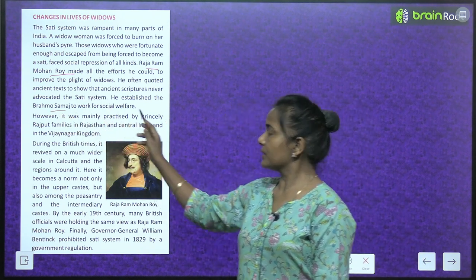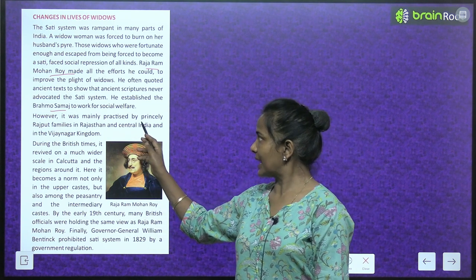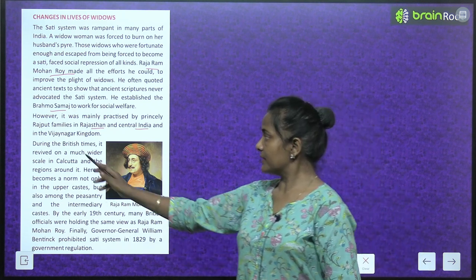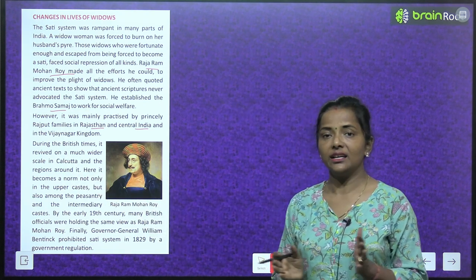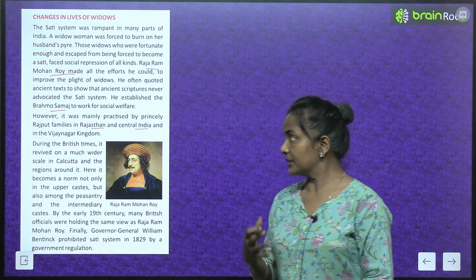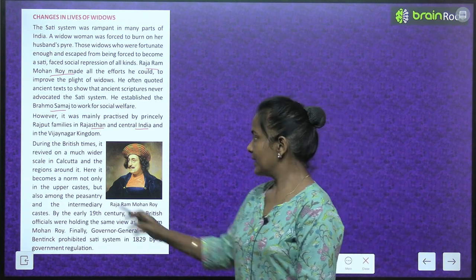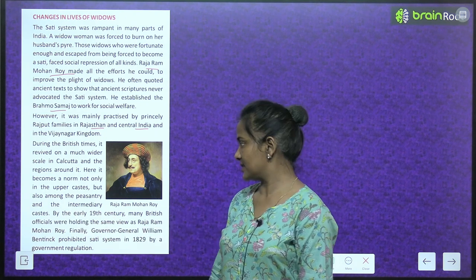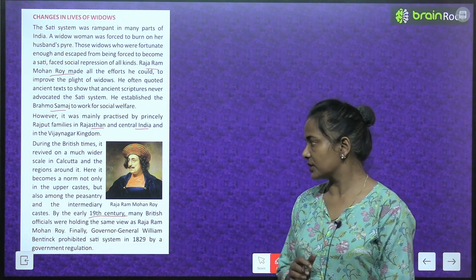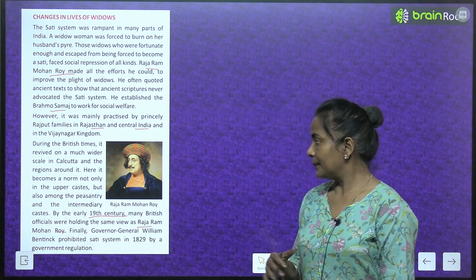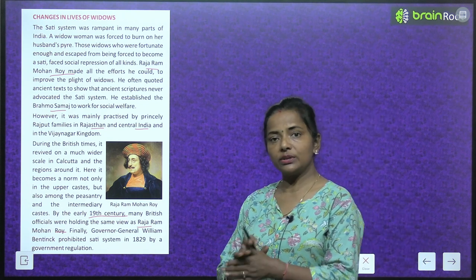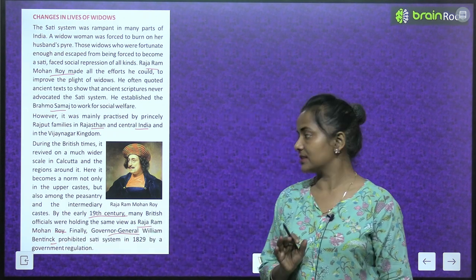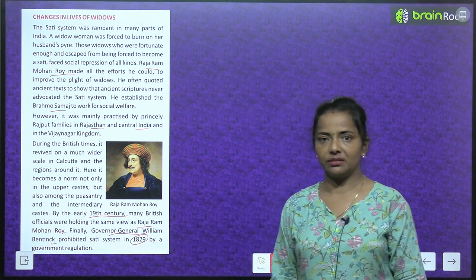He established the Brahmo Samaj to work for social welfare. The sati practice had mainly been practiced by princely Rajput families in Rajasthan and Central India and in the Vijayanagar Kingdom. During British times, it revived on a much wider scale in Calcutta and the regions around it, becoming a norm not only in upper castes but also among the peasantry and the intermediary caste. By the early 19th century, many British officials held the same view as Raja Ram Mohan Roy.